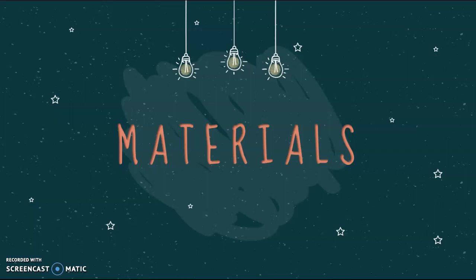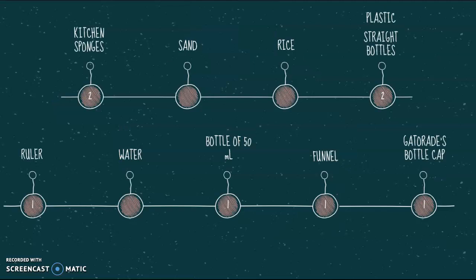Two experiments were carried out to perform the use of a permeameter. The materials for the experiment were two kitchen spoons, some rice, two plastic straight bottles, one ruler, water, one bottle of 50 milliliters, one funnel and one Gatorade bottle cap.